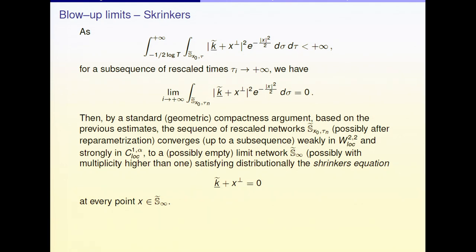Moreover, since the integrand must go to zero, on every fixed ball this squared quantity goes to zero in L^2. By weak convergence, the curvature term is lower semicontinuous, and the position-times-normal term is continuous (C^1 convergence). So in the limit, on every ball the integral of the squared term must be zero, meaning the squared quantity is zero distributionally in W^{2,2}, hence zero everywhere.